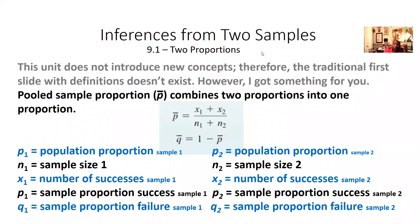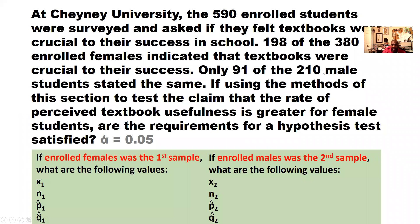Attention class, welcome back to video three of three. I know the last video might have been pretty long. However, I want to make sure that we give you guys two examples of how to make inferences from two sample proportions. This is what we've already went over and discussed in class, but I want to give you another problem. This problem is me just having a little bit of fun, and we're talking about what might have happened at Cheney University. So let's read it.